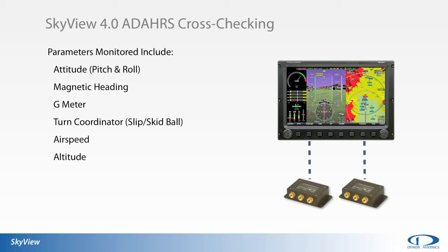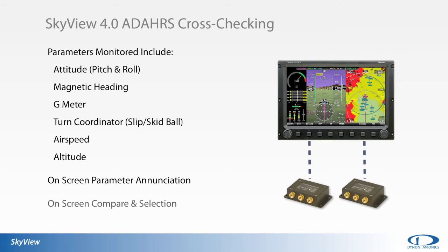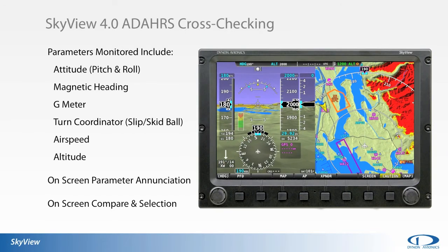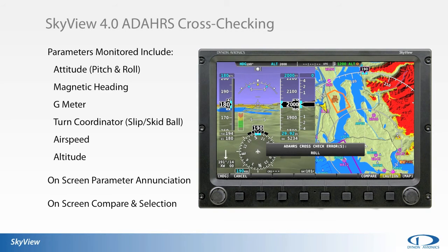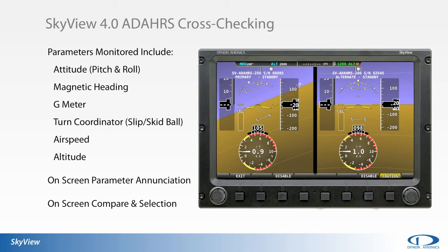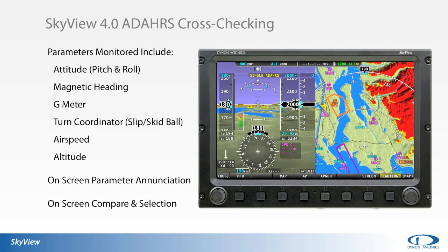If two ADHARS fall into disagreement, an on-screen enunciation identifies the parameter that is at fault and gives the pilot the option of comparing the output from each respective ADHARS unit. Through the on-screen comparison display, the pilot can then select which ADHARS to disable from the system. Output from individual ADHARS and selection of primary and secondary units can also be accessed via the setup menu in the absence of a comparator error.